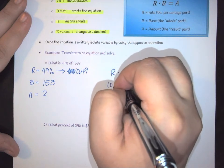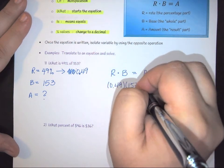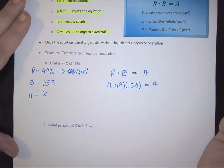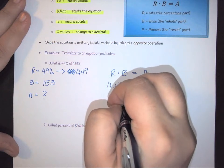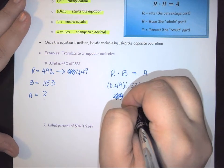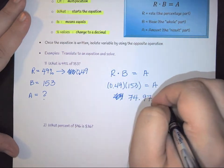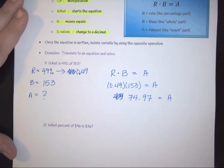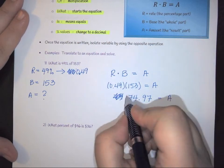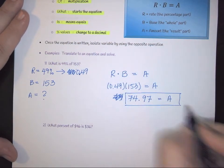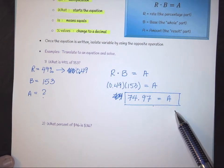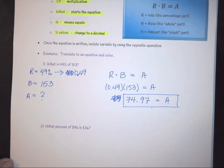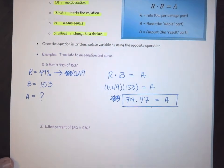So I have 0.49 times 153 is equal to my A term. So we would simply multiply those together and we're going to get 74.97 is going to give you your A. So this is the result that we were looking at. So what this means is that 74.97 is 49% of 153.